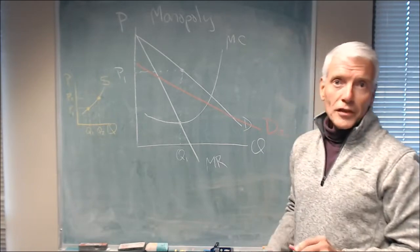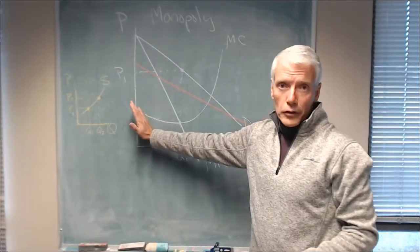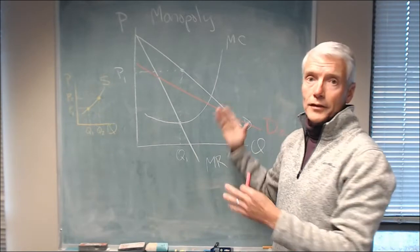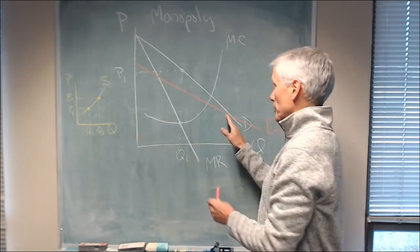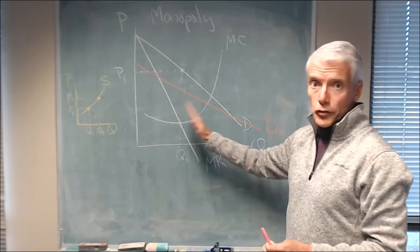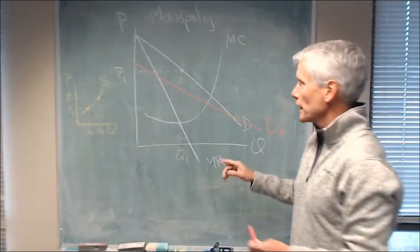D2 is the demand, and we know that the marginal revenue curve for a straight line demand curve is halfway between the demand curve and the vertical axis. So this new one would have a marginal revenue curve that looks like this.